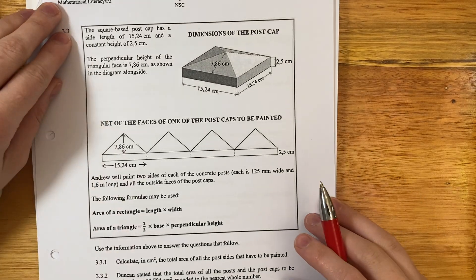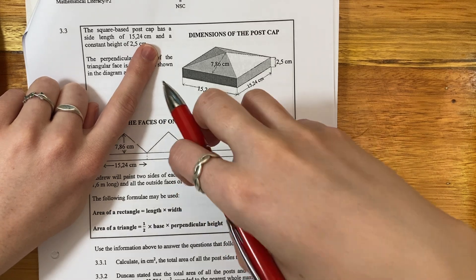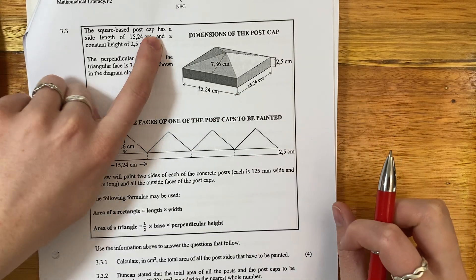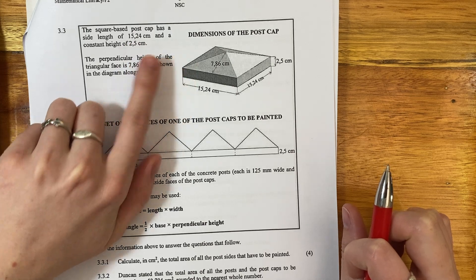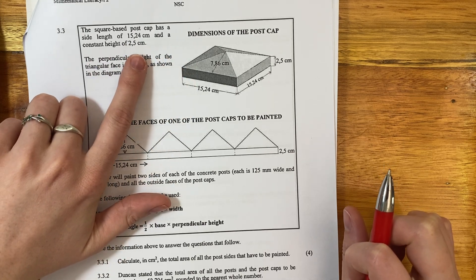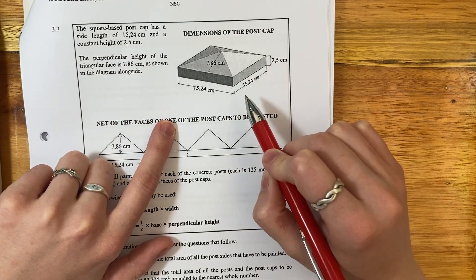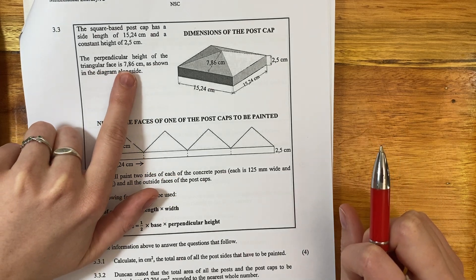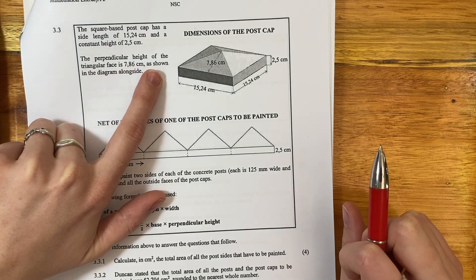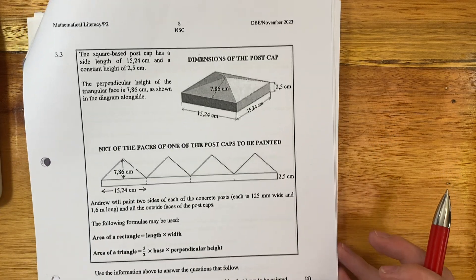Alright, let's look at 3.3. The square-based post cap, remember each of the poles had the cap, that's what we're looking at, has a side length of 15.24 centimeters and a constant height of 2.5 centimeters.